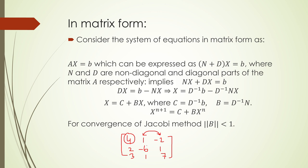Similarly, for row two: |6| > |2| + |1| = 3, which is true. For row three: |7| > |3| + |1| = 4, which is also true. So the matrix [4, 1, -2; 2, 6, 1; 3, 1, 7] is diagonally dominant (DD).